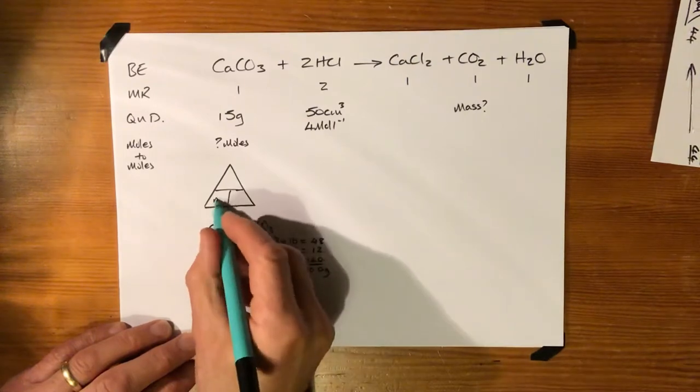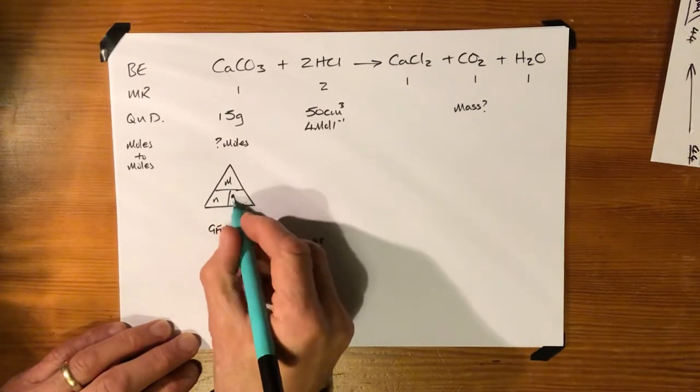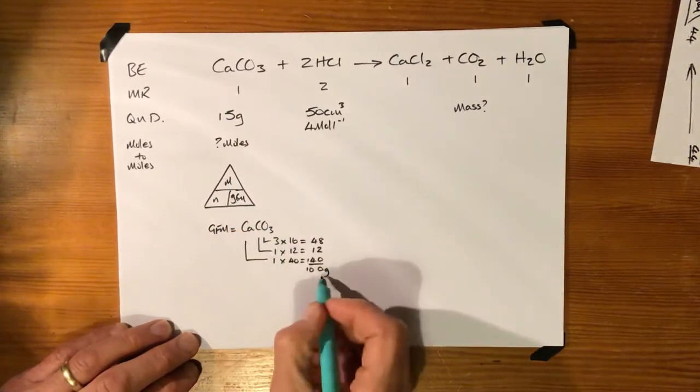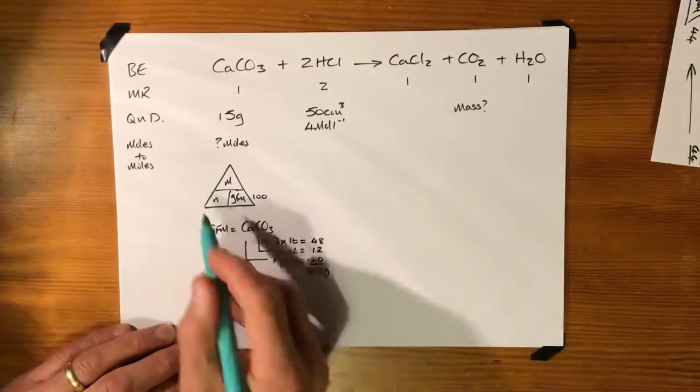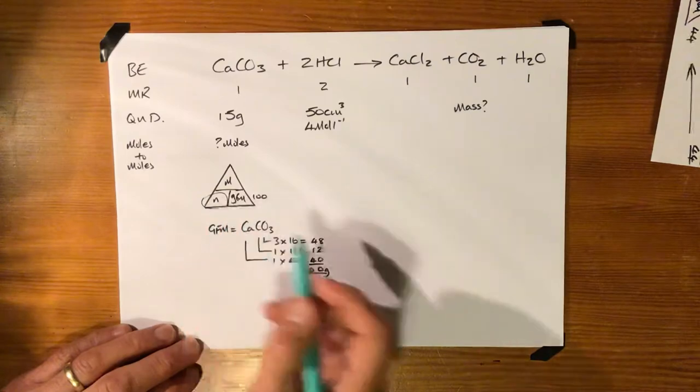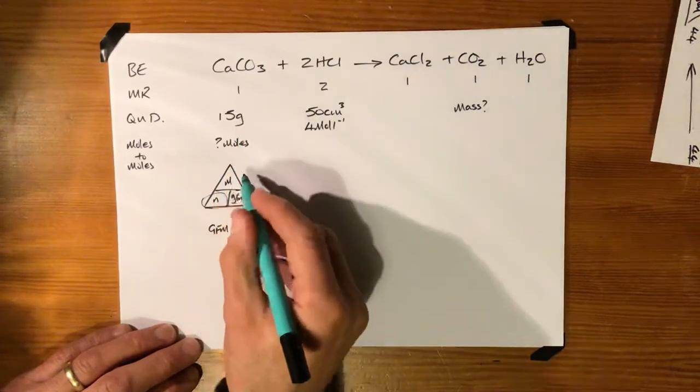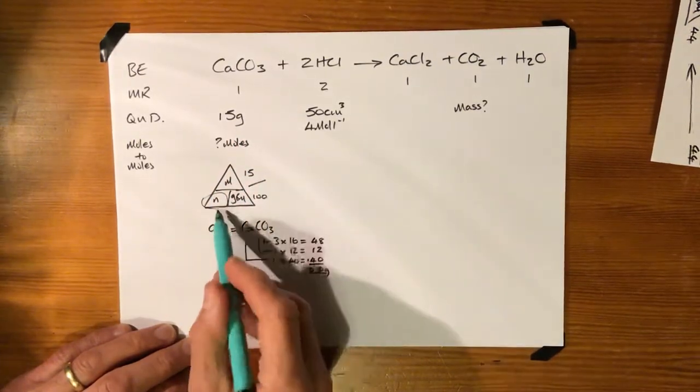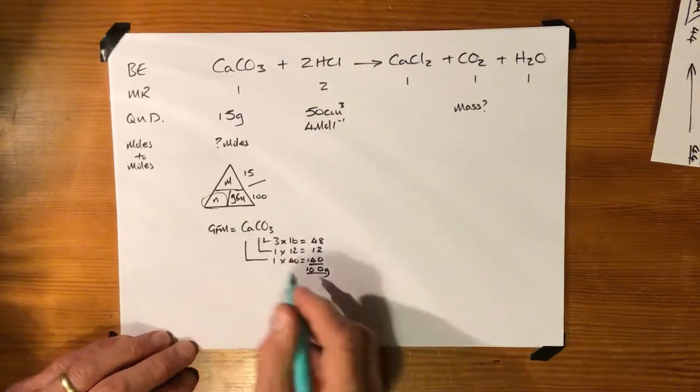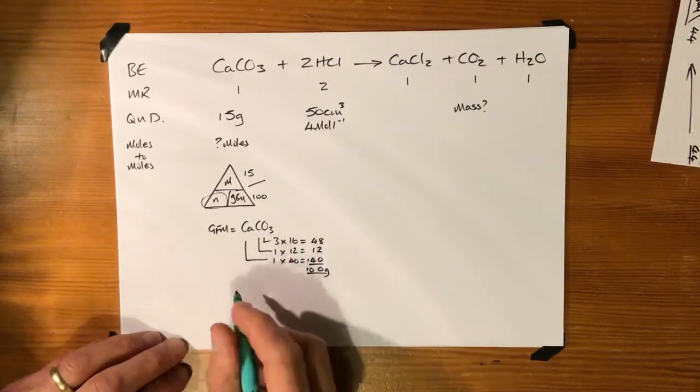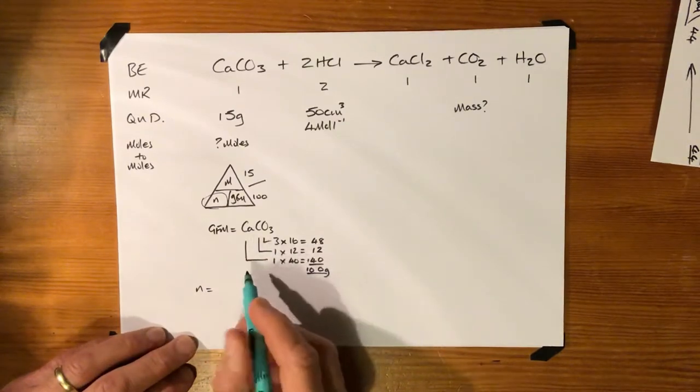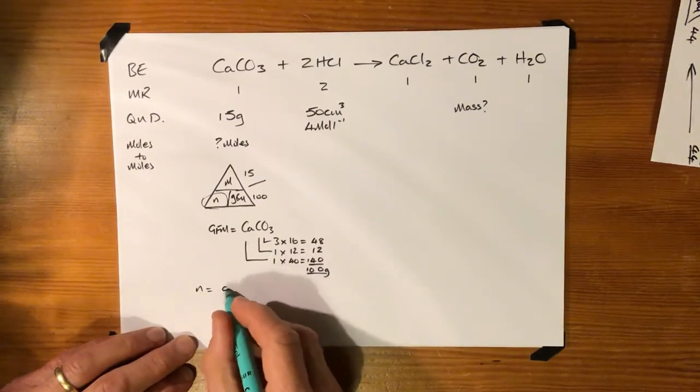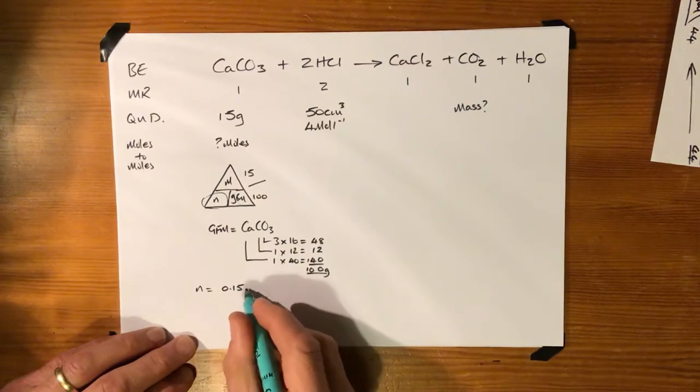Right, so our triangle here, we'll finish that off. Number of moles is mass over gram formula mass. We worked out that the gram formula mass is 100. We're looking to work out how many moles we've got, so we must have a mass and we do, 15. So the number of moles we have here of calcium carbonate is 15 divided by 100, which is 0.15 moles.